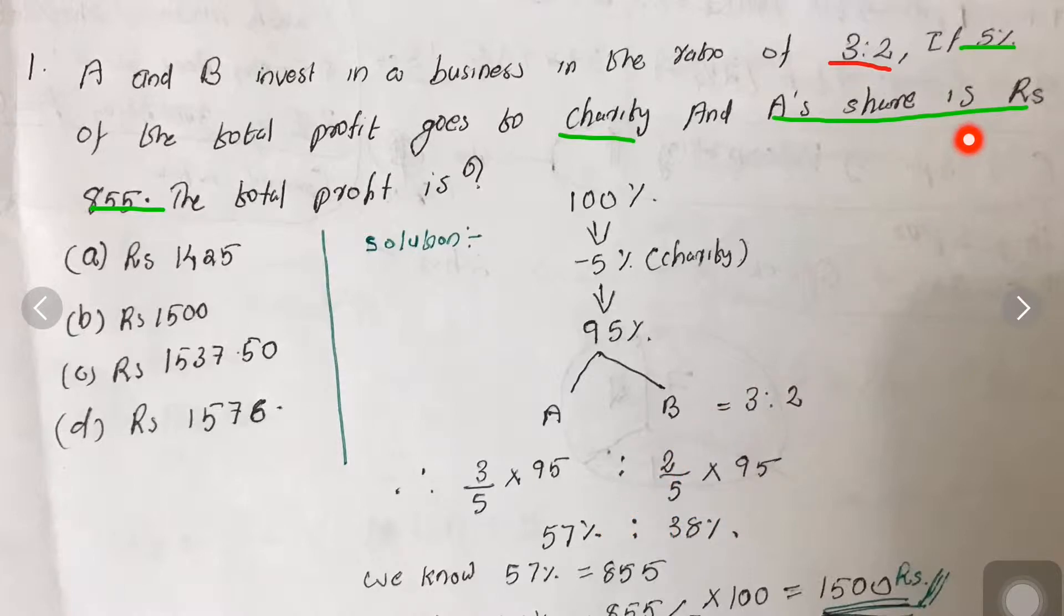A's share is Rs.855, already mentioned in the question. We know 57% is 855. So what is 100%? We can easily find out by 855 divided by 57, multiplied by 100. That gives us Rs.1500 as the total profit.